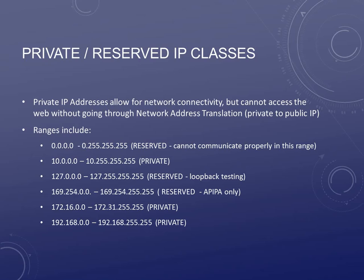Now we have the last two private ranges. The 172.16 to 172.31 range is private — used internally, you can't go out on the internet with it, but if you're running NAT it'll work. And then the one you mostly see used at home: the 192.168 range. Most major internet providers will set up your home network to use the 192.168 address. It's a private range, but your router is going to be doing network address translation to give you an address to get out on the internet.